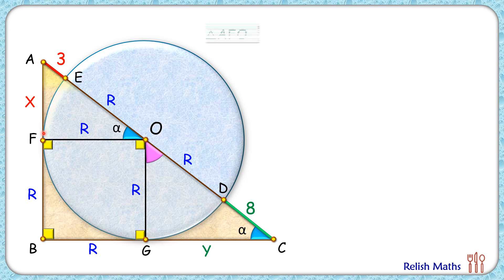Thus the ratio of corresponding sides will be equal, or we can say that AF upon FO will be OG upon GC. Putting the values here, AF upon FO is x by R, and OG by GC is R upon y. Cross multiplying, we'll get x times y is R squared.